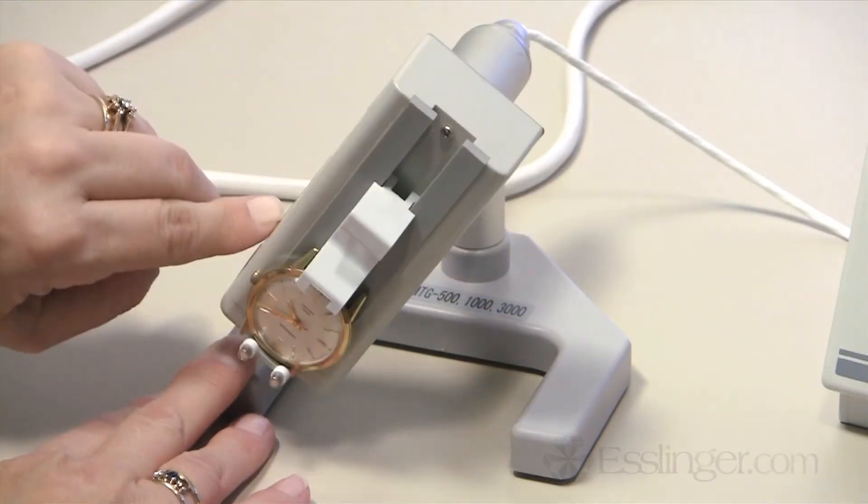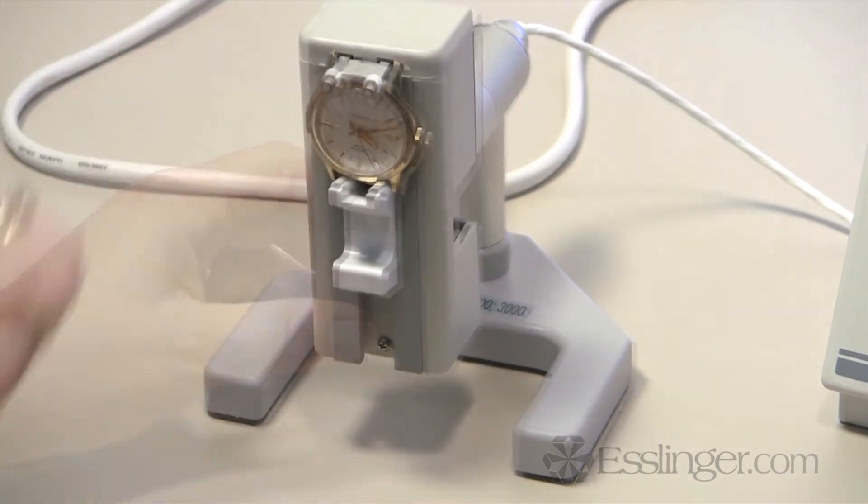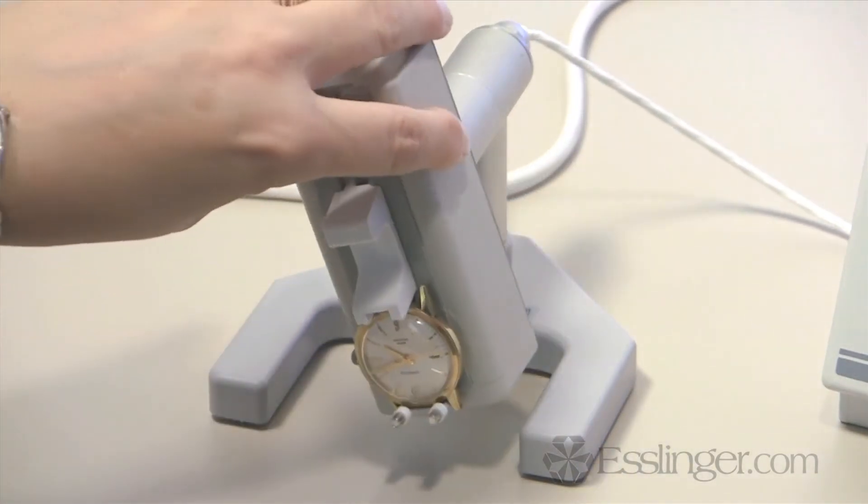Most watchmakers know that each watch will operate differently at different positions. The TYMC tester's standard microphone reader can rotate to six different positions to give you the most complete information on your watch.